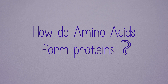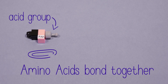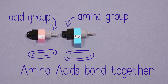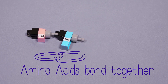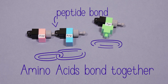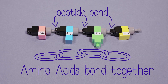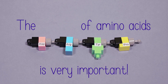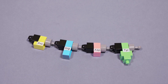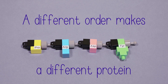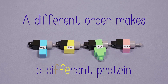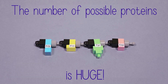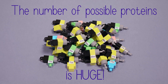How do amino acids form proteins? Amino acids bond together. An acid group bonds to an amino group to form a peptide bond between amino acids. The order of amino acids is very important — a different order makes a different protein. The number of possible proteins is huge!